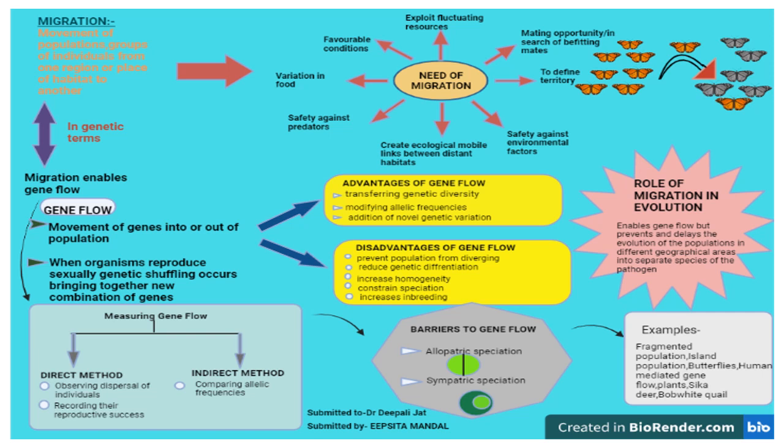The third example is the Bob White Quail. They were translocated to the southern part of Ontario in order to increase population numbers and game. But the hybrids that resulted from the translocation were less fit than the original population and were not adapted to survive in the northern winters.